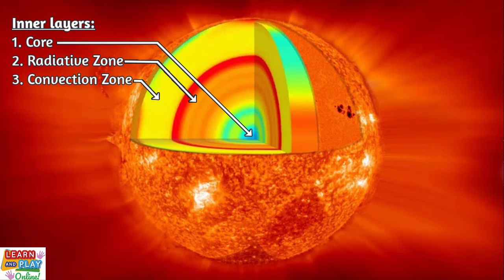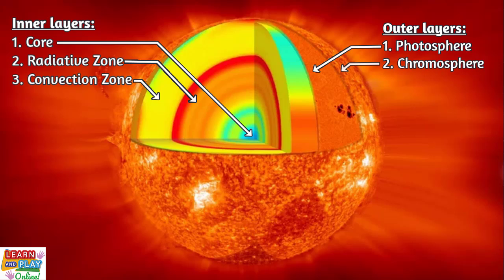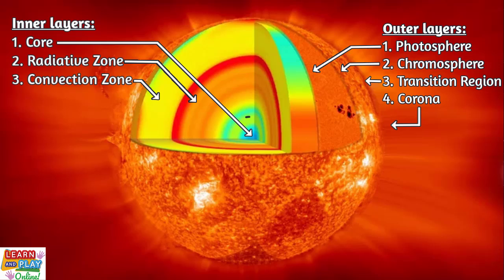and the convection zone. There are four distinct layers that make up the outer layers, which are the photosphere, chromosphere, transition region, and the corona. At the very center of the sun is the core, and this is the hottest region of the sun. It is about a whopping 15 million degrees Celsius, or 27 million degrees Fahrenheit.